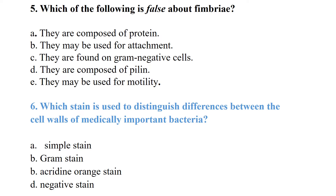Small projections on the bacterial surface are called fimbriae. They are protein in nature. All of their functions are present except one — they are not used for motility. Their other functions include attachment and adherence. Fimbriae are found on gram-negative bacteria and are composed of pilin protein, but they are not used for motility.